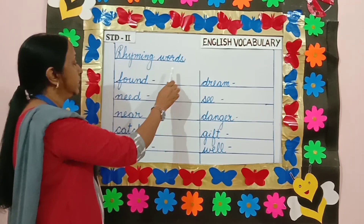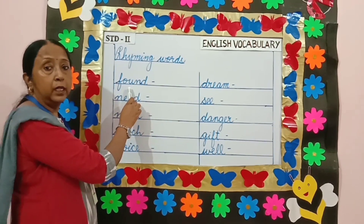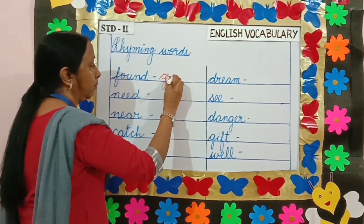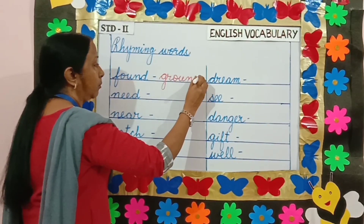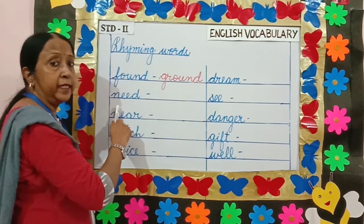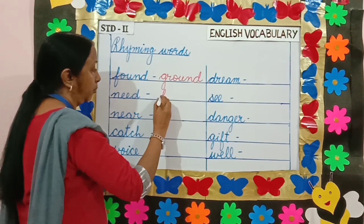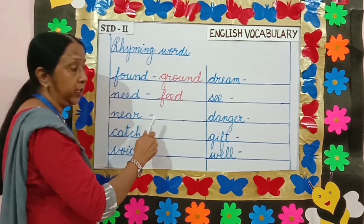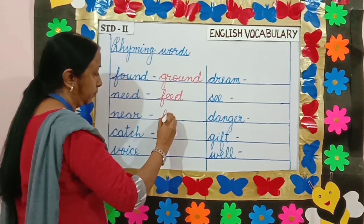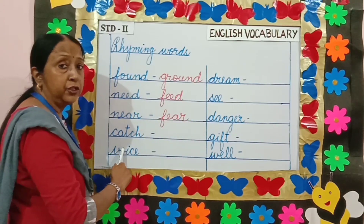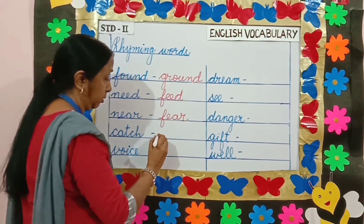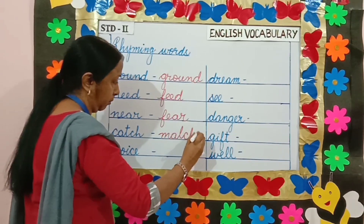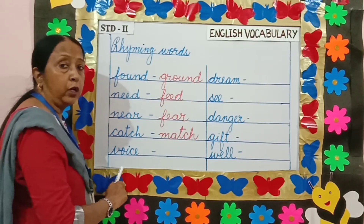Rhyming words: Pound and ground. Need and feed. Near and fear. Catch and match. Voice and choice.